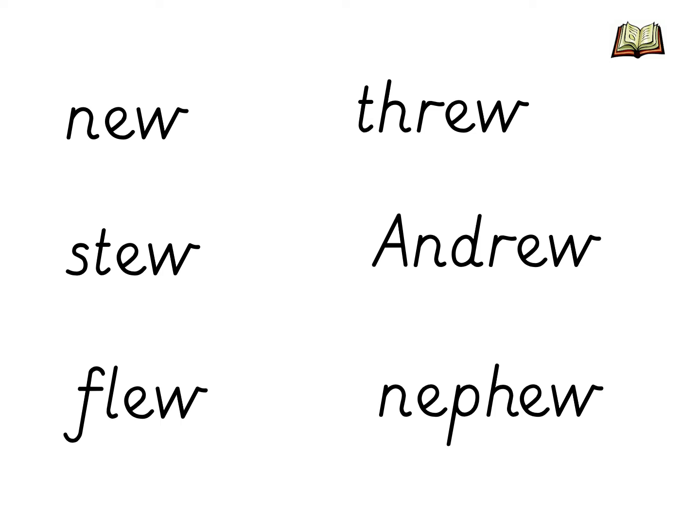Have you read all of the words? The first word was NEW, the next was STEW, then FLEW, THREW, ANDREW. Did you notice the capital letter at the beginning of ANDREW? That's because it's a proper noun, isn't it? It's a person's name. And the last word was NEPHEW. The NEPHEW is a son of someone's brother or sister. And NEPHEW has the diagraph F that we were practicing previously.